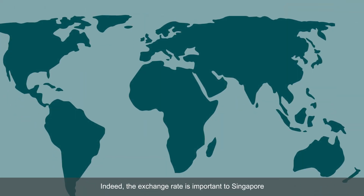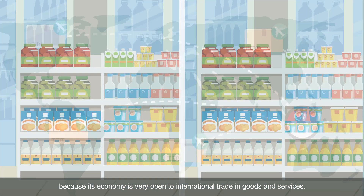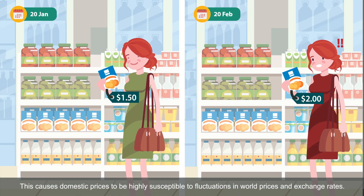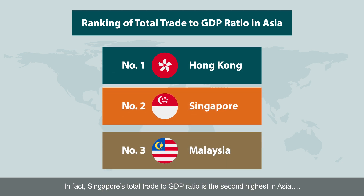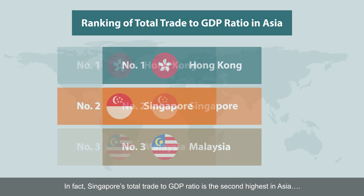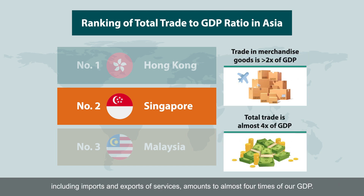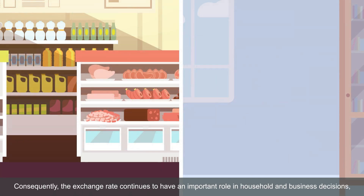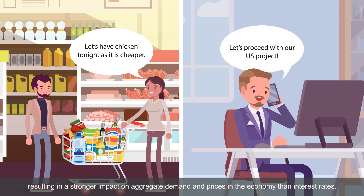Indeed, the exchange rate is important to Singapore because its economy is very open to international trade in goods and services. This causes domestic prices to be highly susceptible to fluctuations in world prices and exchange rates. In fact, Singapore's total trade to GDP ratio is the second highest in Asia, with trade in merchandise goods amounting to more than two times Singapore's GDP. Over the years, Singapore's total trade, including imports and exports of services, amounts to almost four times of our GDP. Consequently, the exchange rate continues to have an important role in household and business decisions, resulting in a stronger impact on aggregate demand and prices in the economy than interest rates.